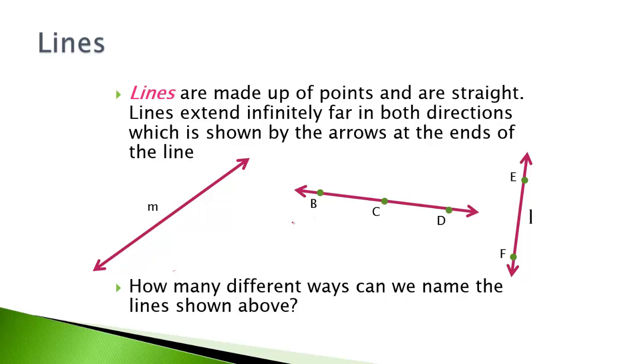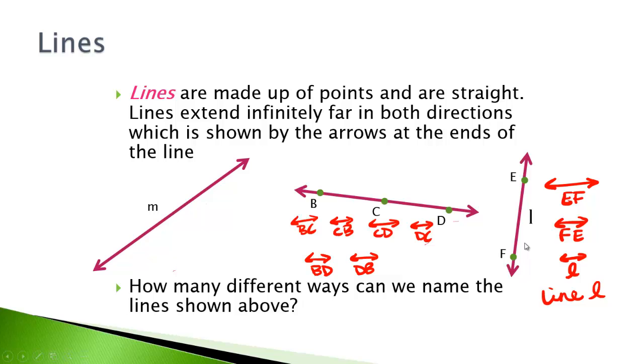This one, for example, we could name line BC. You could name it line CB, you could name it line CD, you could name it line DC, or BD, or DB. And the reason for that is because a line extends infinitely in either direction. Any two points that are on that line, you can use to name it. So if I asked you to name this line one way, any one of these would be correct. For this one, there's three ways you can name it: line EF, line FE, or just line L.